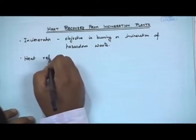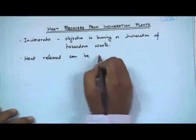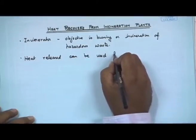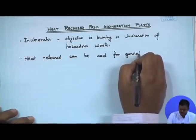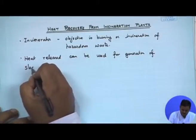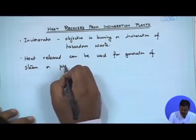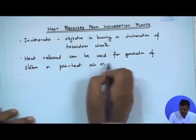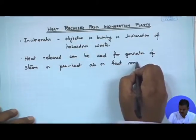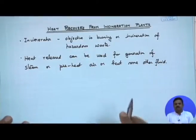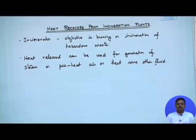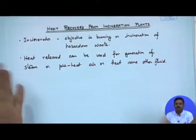The heat released can be used for heating another process stream, for heating a boiler in a power plant to generate electricity, for generation of steam, preheating air, or heating some other fluid — for example, a central heating unit can use the heat released from an incinerator.